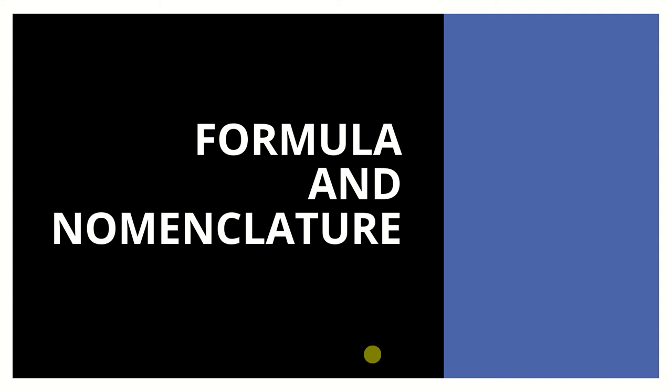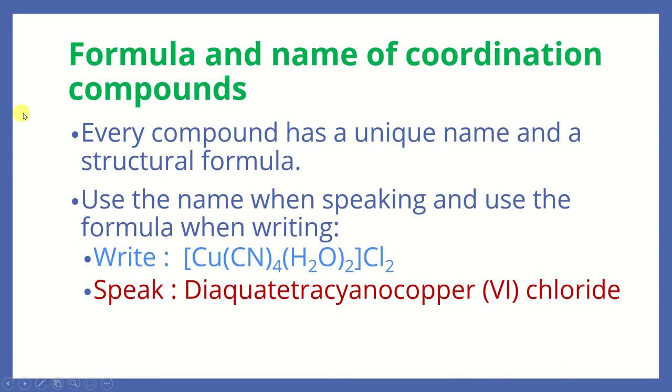Sawatdee ka. This video we are going to look at the formula and nomenclature of the coordination compound. This is just going to be an introduction and we are going to look at simple compounds because from the previous lesson, this group of substances are very big and sometimes consists of very big, very complicated molecules connected to a metal ion. So sometimes it will be very difficult to give a systematic name for a very complex molecule. Every compound has a unique name and structural formula. As scientists, you should be able to show a correct formula and give a correct name for a substance.